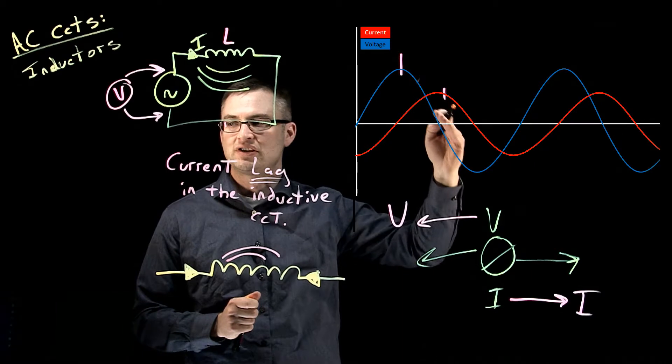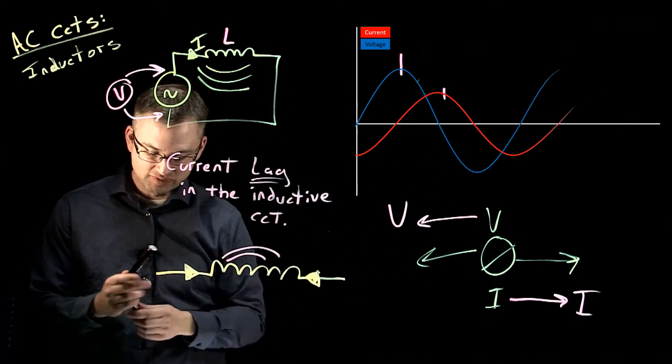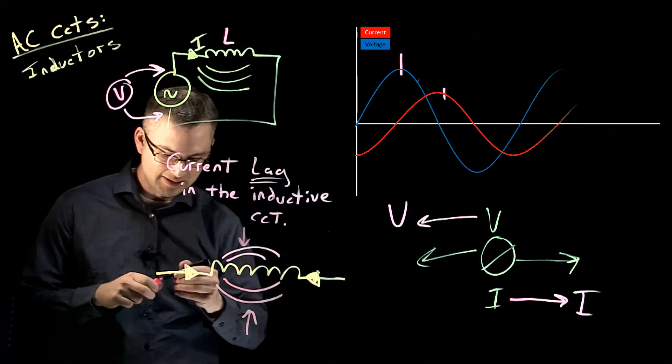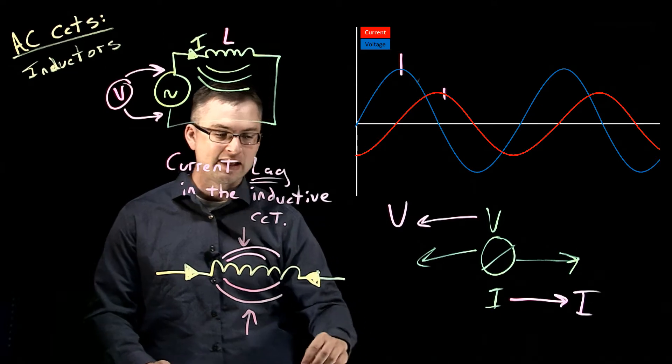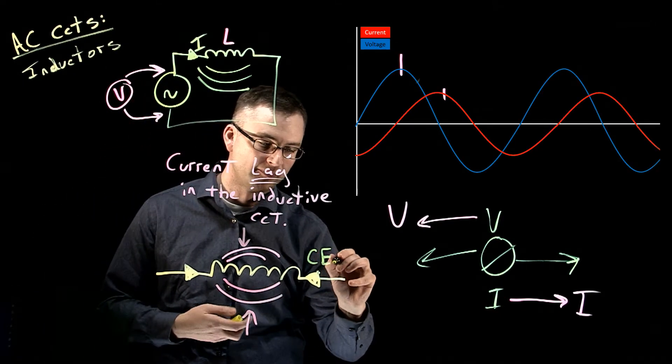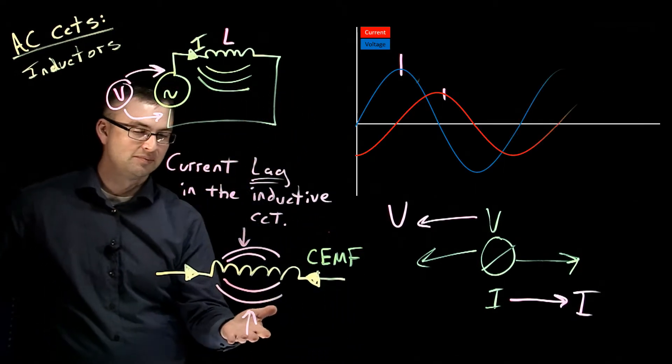As voltage starts to come down, current starts to rise, and we're seeing the result of a continuously expanding and contracting magnetic field. It causes that current to lag primarily due to this effect of counter-EMF produced by the expanding and contracting magnetic field.